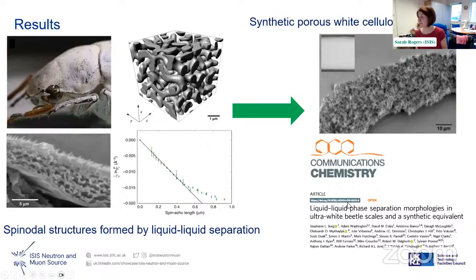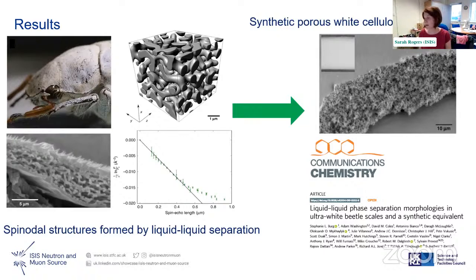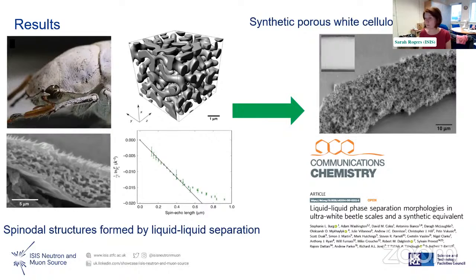By combining all these measurements, they determined that these are spinodal-type structures formed by liquid-liquid phase separation, which they tracked with spin echo SANS. They have now been able to make a synthetic porous white cellulose acetate film that looks like the beetle's shell, and can hopefully be used to make white structural colour paint — a really nice multi-technique approach to a complex problem.